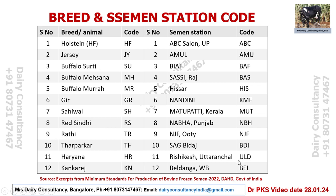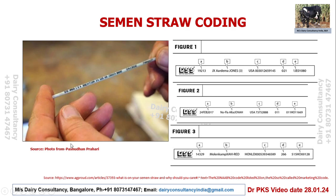These codes are marked on the semen straw, and the markings must be deciphered to understand what semen was introduced into the animal. This is very important because in 90% of cases, farmers are ignorant about this. The inseminator comes, inseminates, and leaves — taking or discarding the empty straw. It is most important for the farmer to keep the empty straw with its markings so it can be examined to know what kind of semen was used.